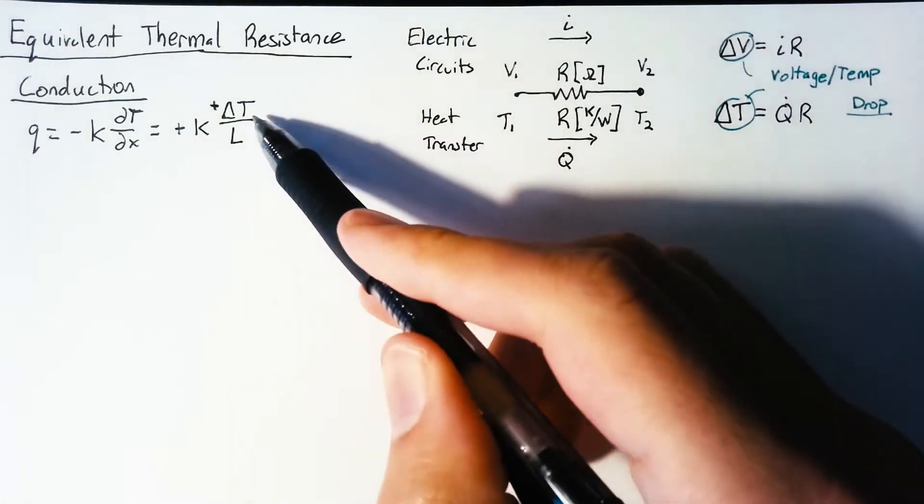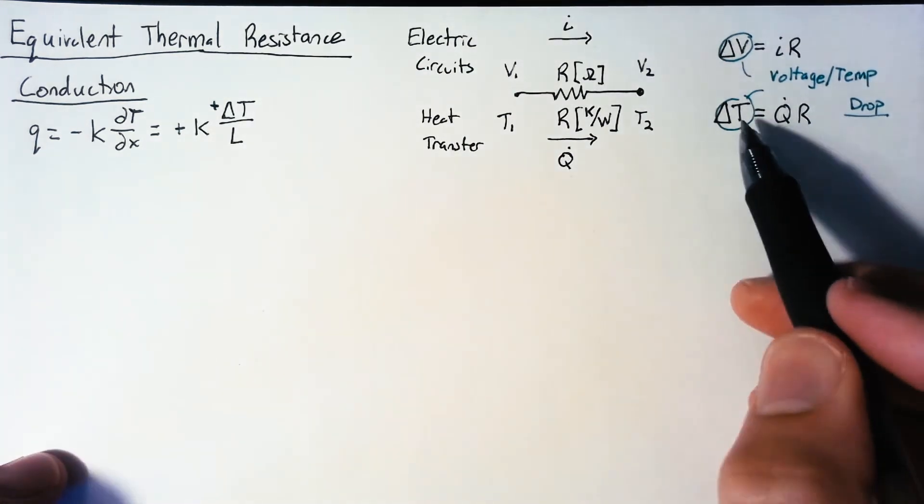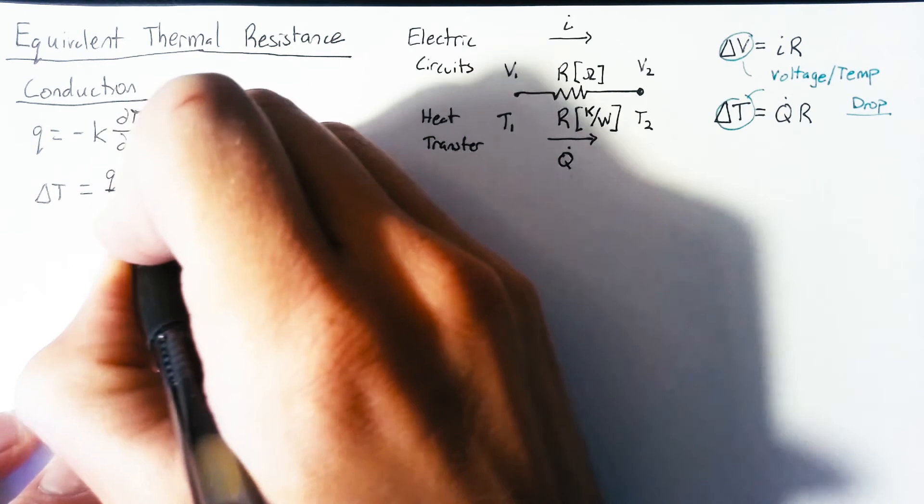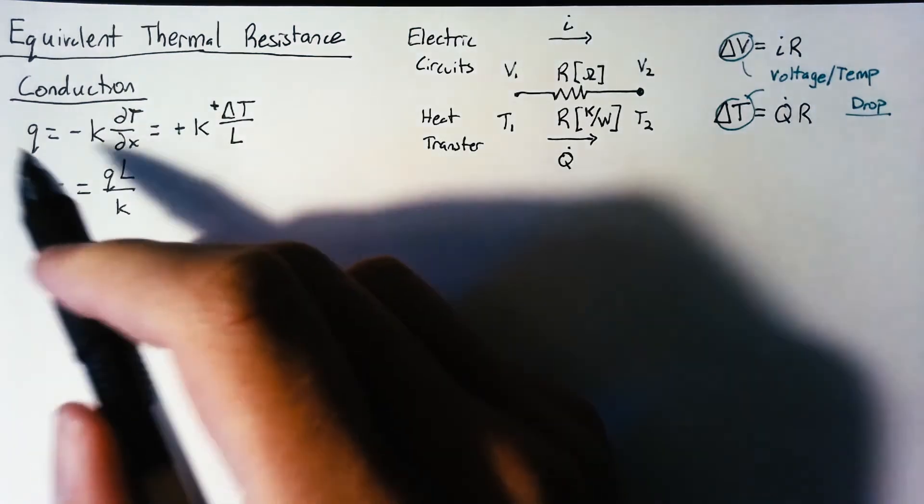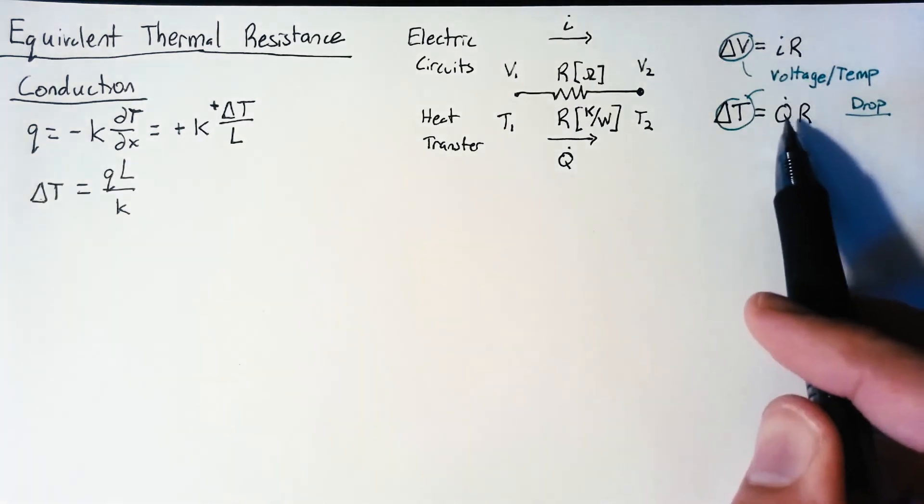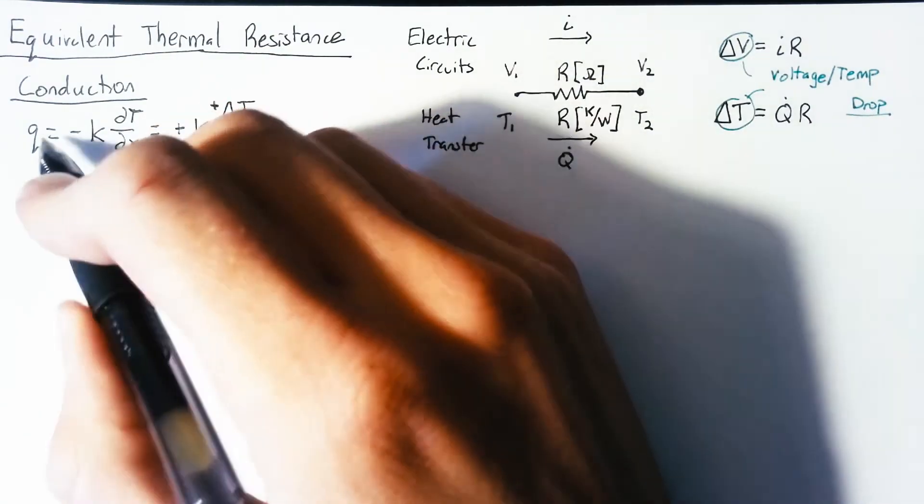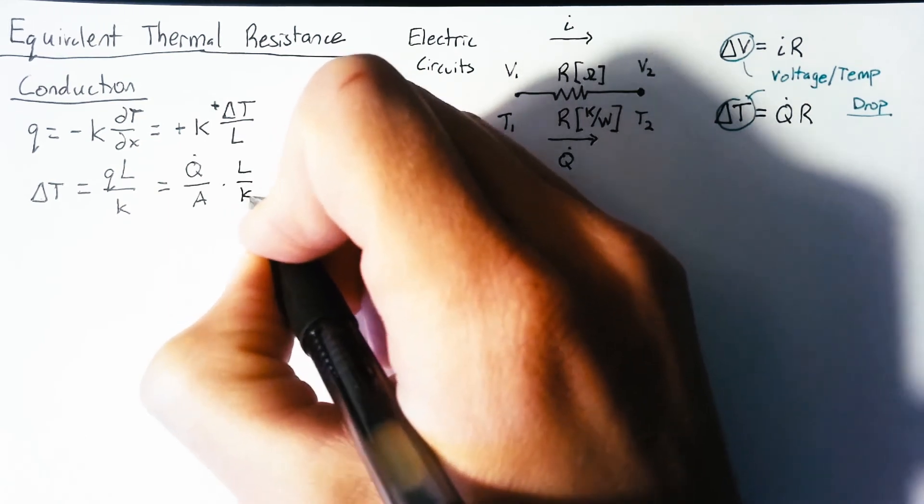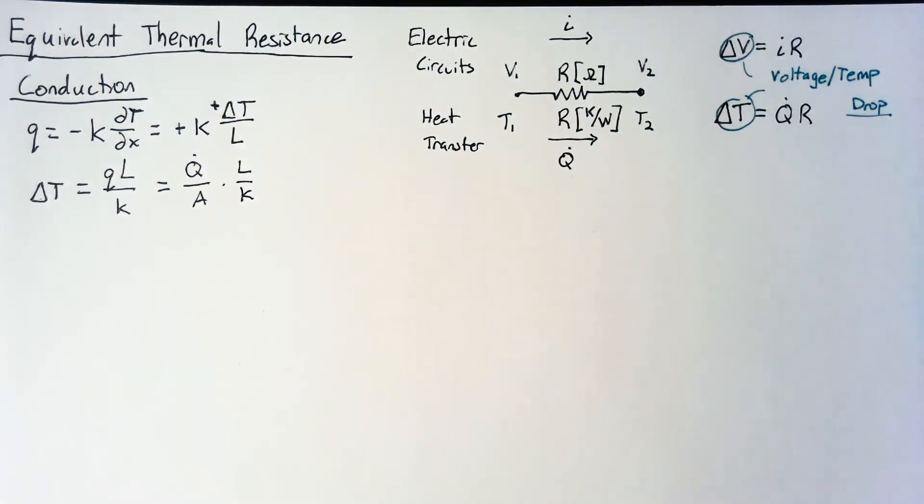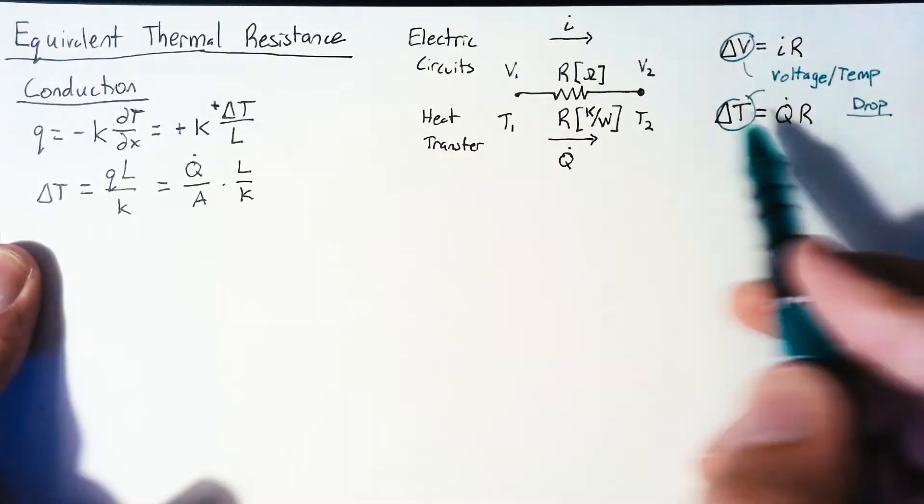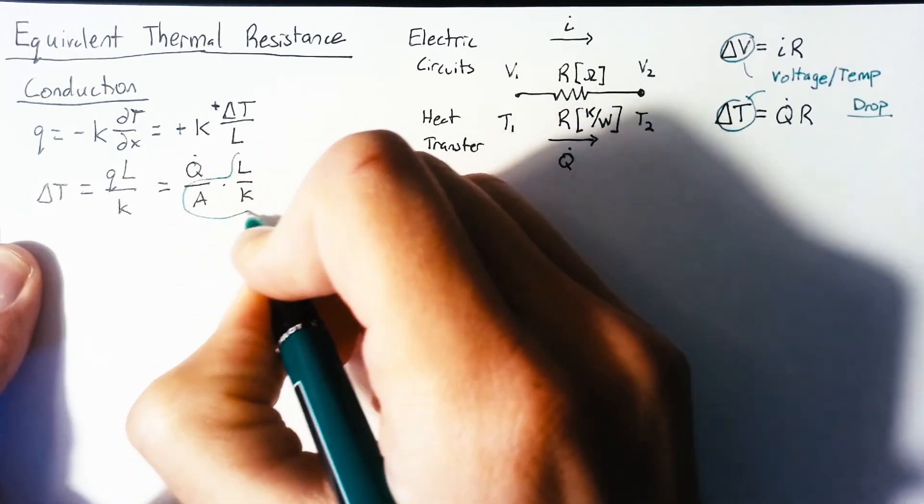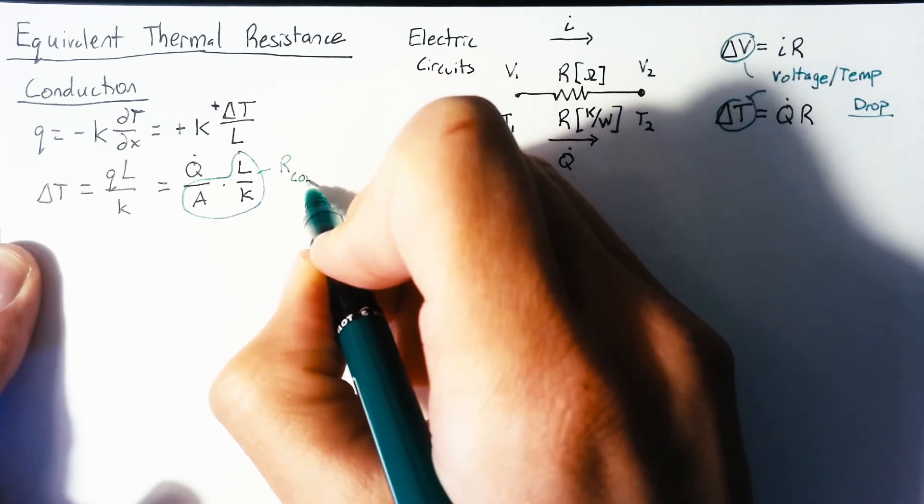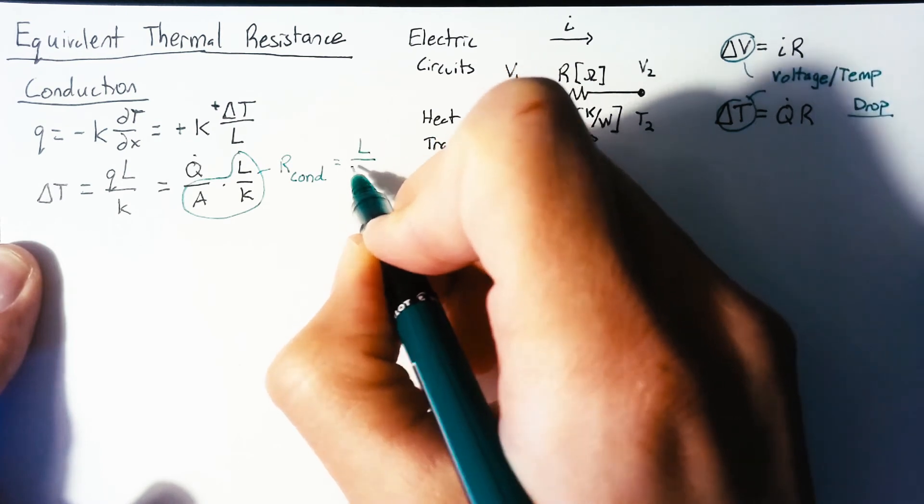We have our delta T. We still need to get our Q dot, so let's solve for delta T to get things as close to this as possible. We have delta T is equal to Q L over K. And remember that the relationship between heat flux and our heat flow or heat transfer is just lowercase q is equal to capital Q dot over A, and then we keep that L over K along. And now we're in a place where we can actually identify our resistance. So we have our delta T is equal to Q dot multiplied by stuff. Well, all that stuff, L over K A, is our resistance. So I'm going to label this as our conductive resistance is equal to L over K A.